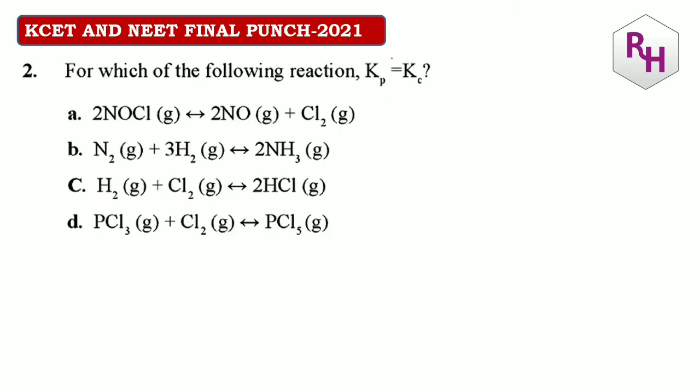For the reaction where Kp is equal to Kc, remember: delta n must equal 0. Delta n = 0 means the number of gaseous moles of reactants and products are the same. So the answer should be C.